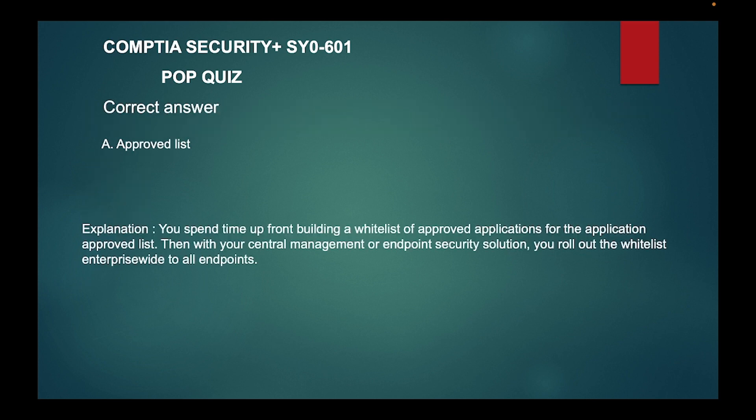The correct answer is a) approved list. You spend time up front building a whitelist of approved applications for the application approved list, then with your central management and endpoint security solution, you roll out the whitelist enterprise-wide to all endpoints.